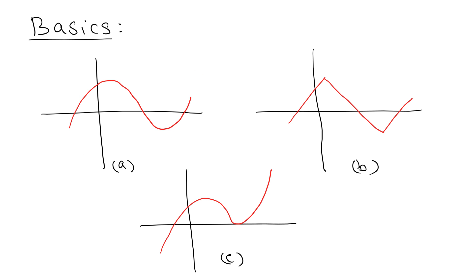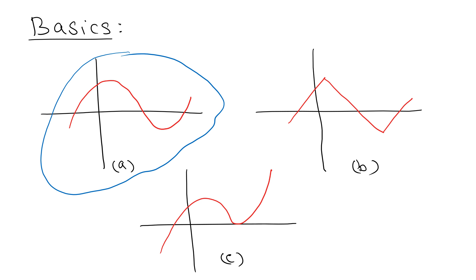What we have most commonly is Case A — that is the most common case. The other ones, like when the absolute maximum is at a corner, happen rarely. But when you get a problem, you need to see what kind of problem you have; otherwise your answer may not be correct.